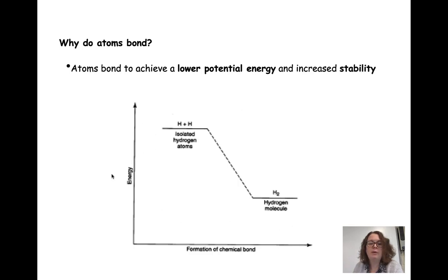We can think of that on a scale and a graph. On our y-axis we have energy, and we're showing the formation of a chemical bond along the x-axis. If we have two isolated hydrogen atoms, these two atoms have fairly high energy. But when they come together to form a hydrogen molecule, or H2, they have much lower energy.